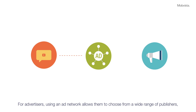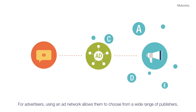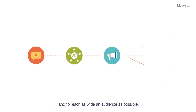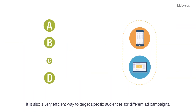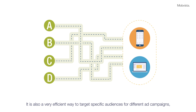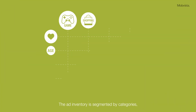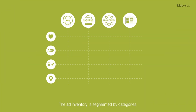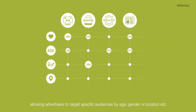For advertisers, using an ad network allows them to choose from a wide range of publishers and to reach as wide an audience as possible. An ad network is also an efficient way to target specific audiences for different ad campaigns. The ad inventory on it is segmented by categories, allowing advertisers to target specific audiences by age, gender, or location, etc.